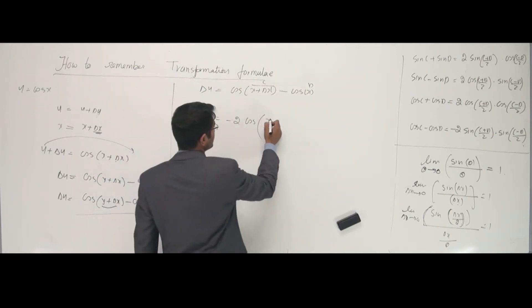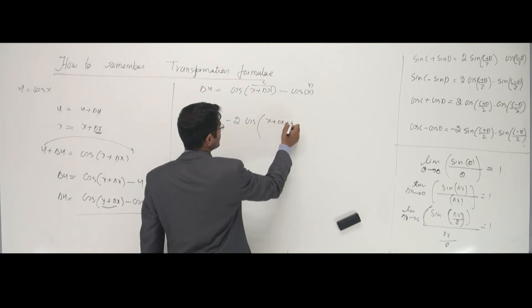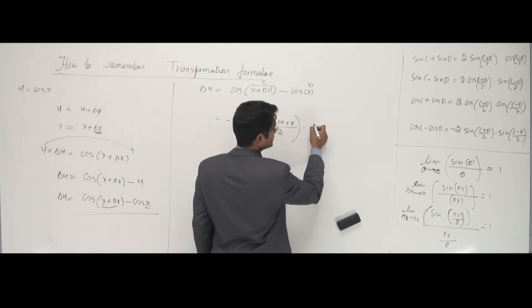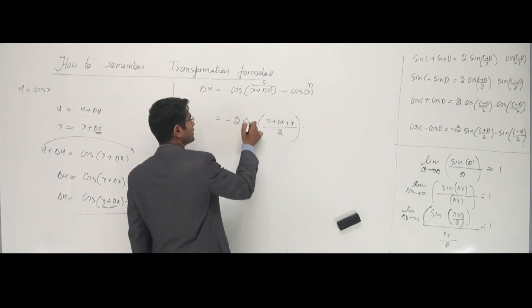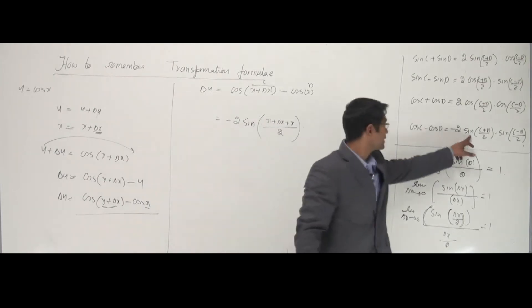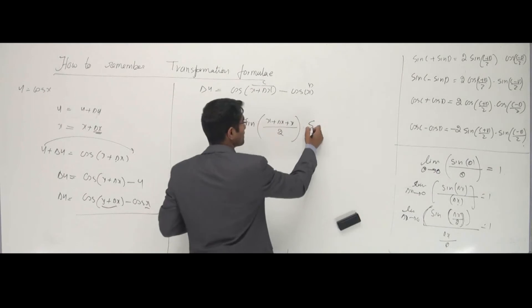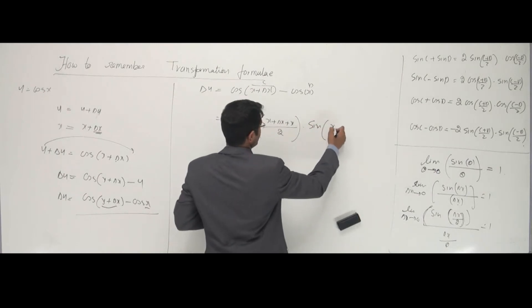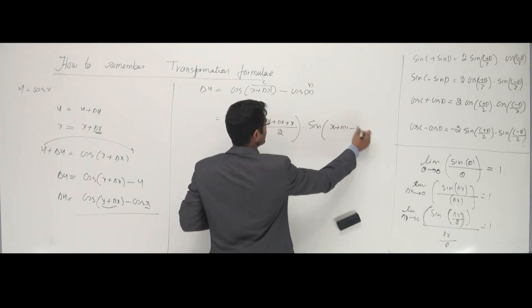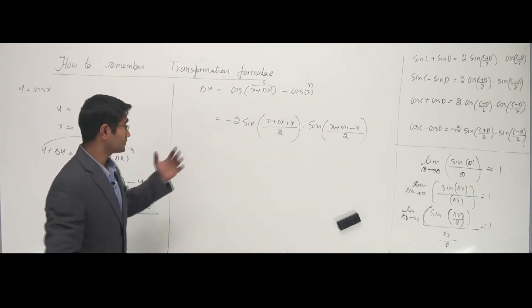So that's x plus delta x plus x, the whole thing by 2, times sine of x plus delta x minus x by 2. Both are sine here, so sine x plus delta x minus x by 2.